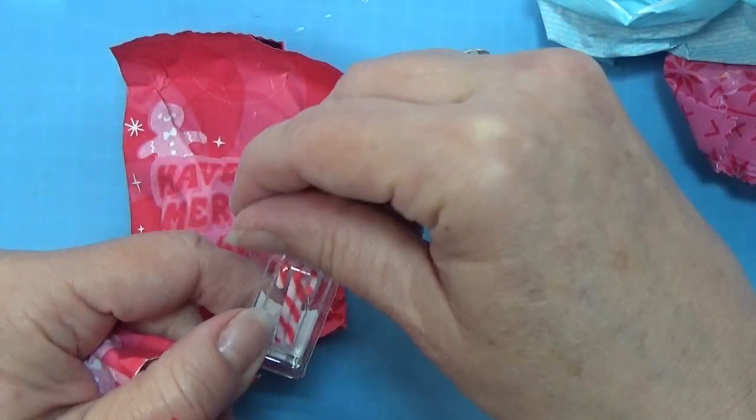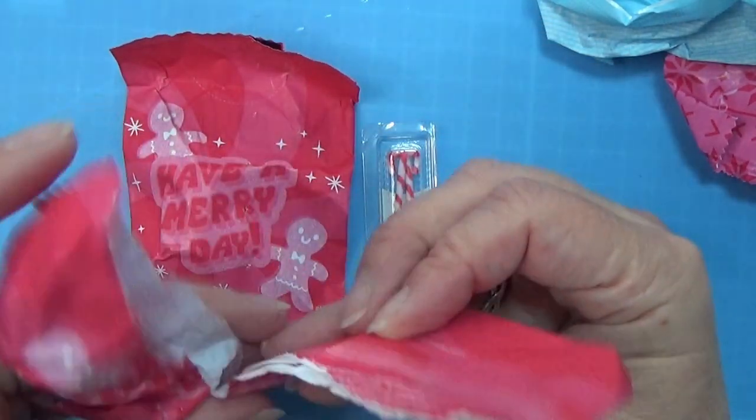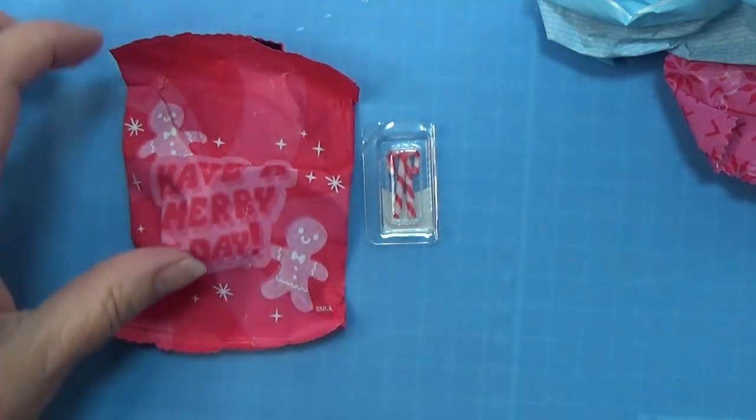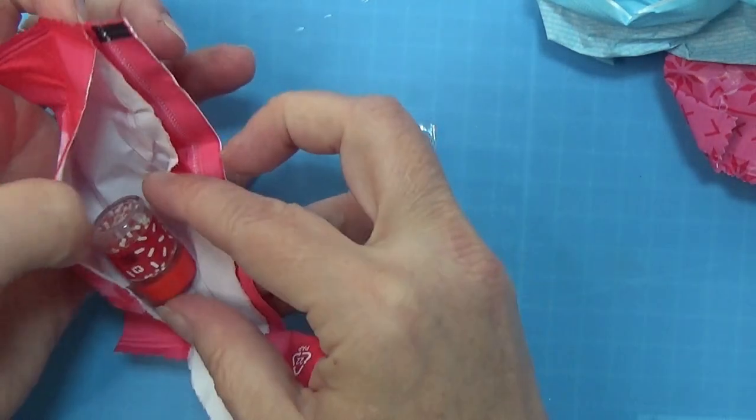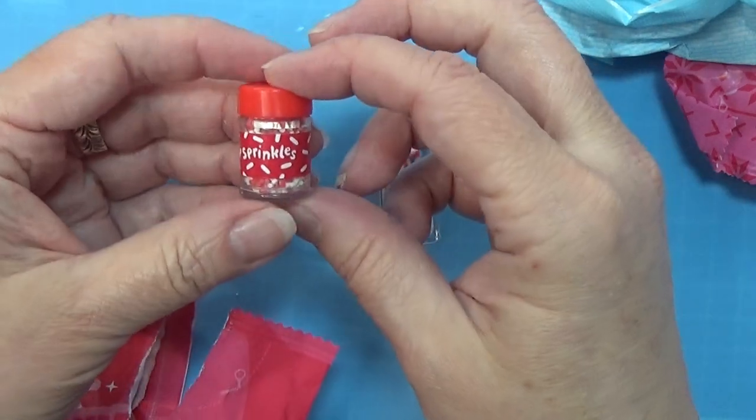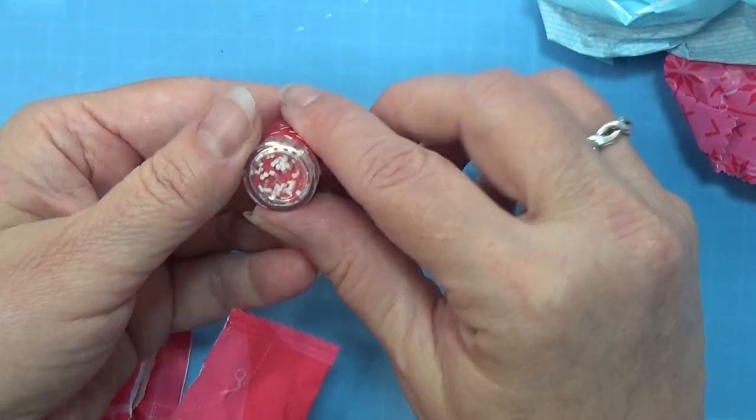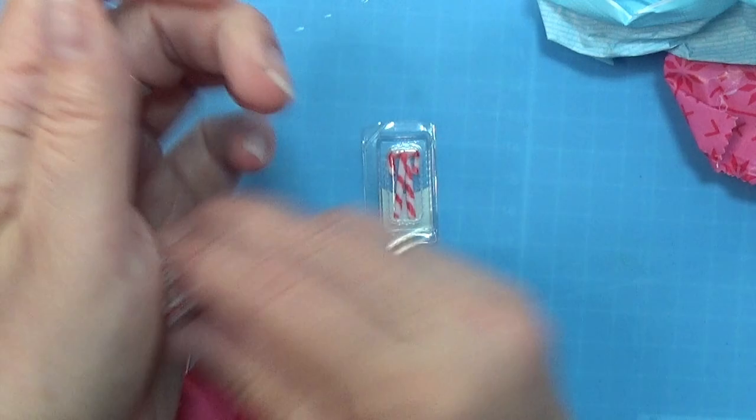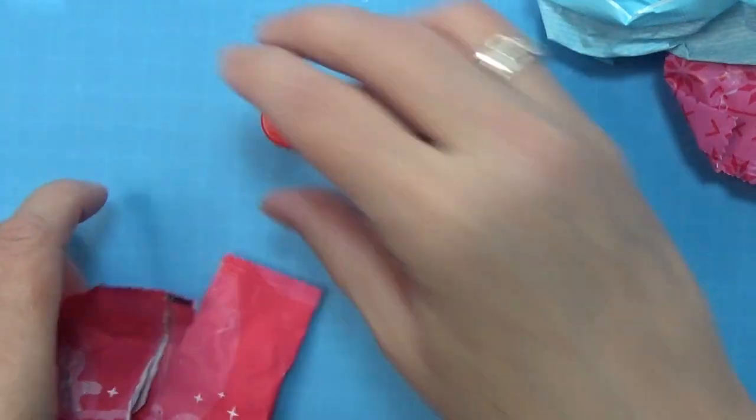Ooh, candy canes. I like that. There was nothing more in that one. And then this one. Oh, sprinkles in a red and white. Tiny sprinkles. Nice.